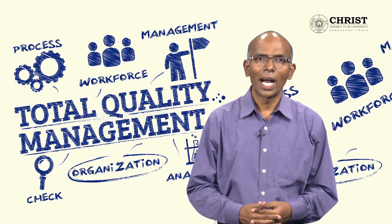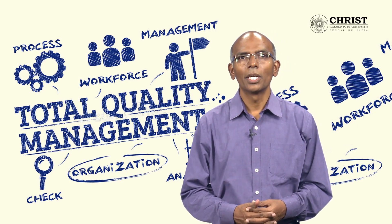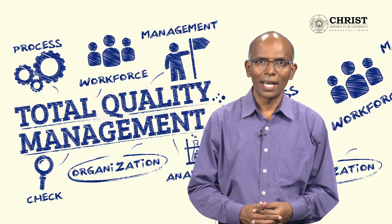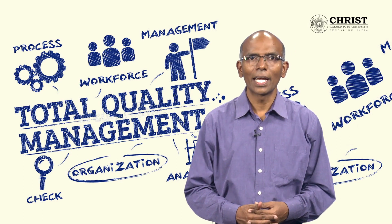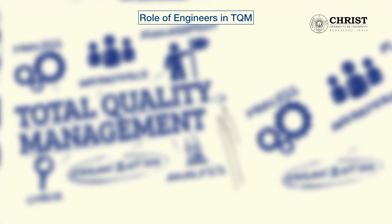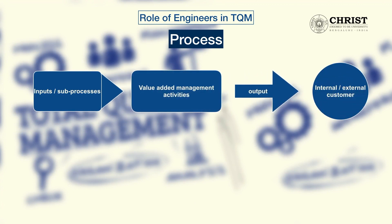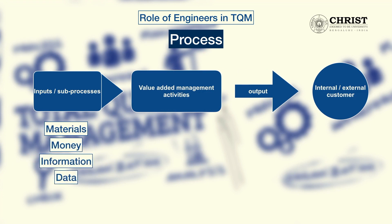Now coming back to my subject, I wish to introduce you to some of the tools and techniques used in TQM. First, let us understand what a process is in a quality management system. As you can see in the diagram, it has inputs or sub-processes and an output delivered to an internal or external customer. The inputs could be materials, money, information, data, etc. And the output could be products, services, data, etc.